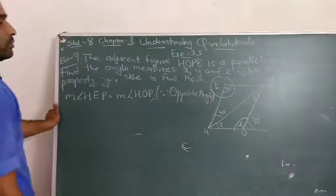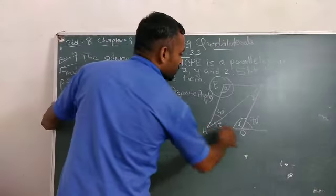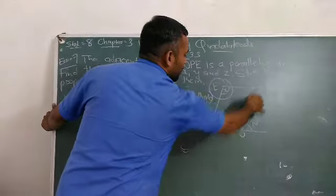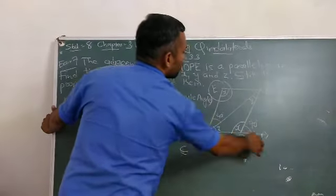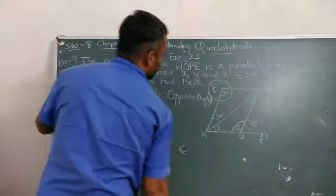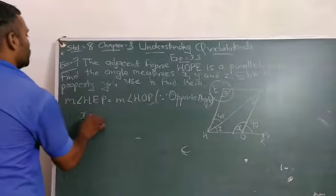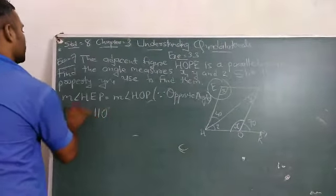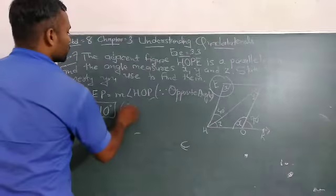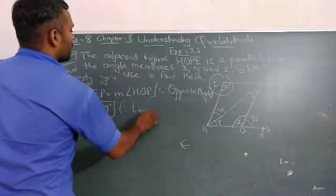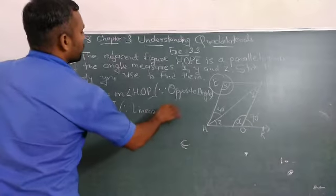Now, angle HOP and angle POR form a linear pair. So X is equal to 110 degrees because these are linear pair.